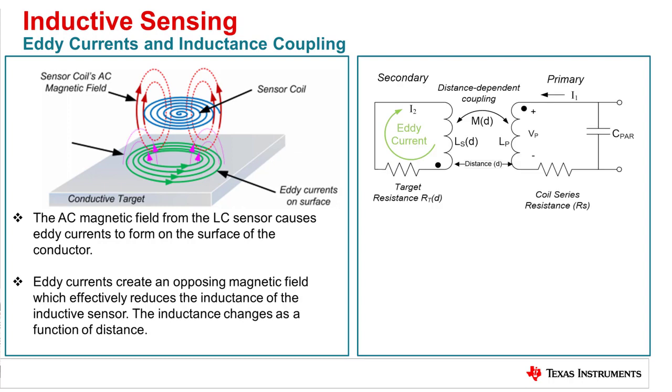This circuit shows the electrical model of the LDC sensor. The primary side represents the LC tank or sense element and the secondary side represents the conductive target. Note that both the target and coil system have a resistance associated with it.